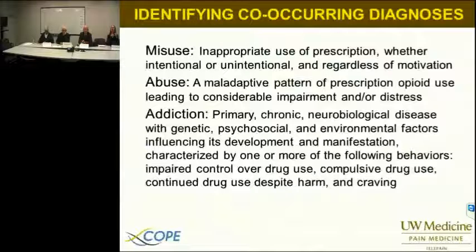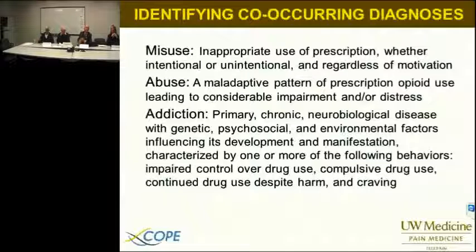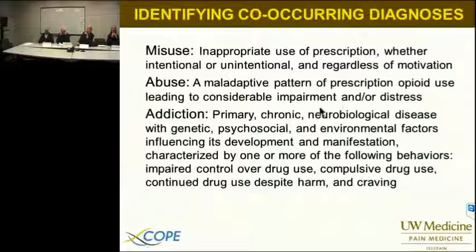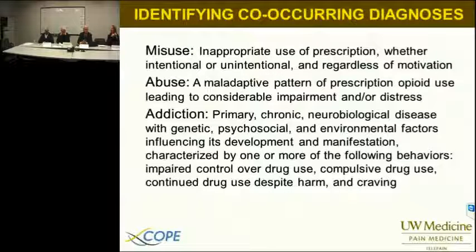Abuse, addiction, and misuse are three separate disorders. Misuse means the patient's not taking as directed — it may be accidental or malicious, but most patients don't take their drugs as prescribed. In older patients, misuse often means they're not taking them as often as you recommend. Abuse is a maladaptive pattern of prescriptive opiate use leading to impairment or distress. Addiction is a chronic primary neurobiological disease, and it's very important to be able to make this diagnosis. Dr. Joe Merrill will give us a full didactic using the DSM-5 criteria.